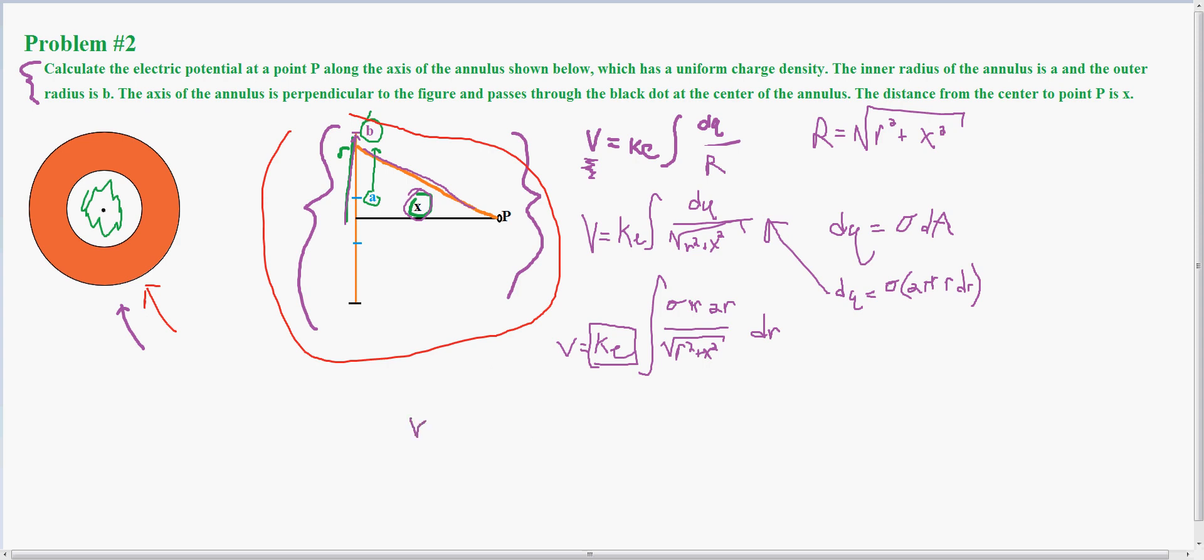I pull out the constants, and this is over the integral from A to B. The potential equals Coulomb's constant times the surface density times 2π.